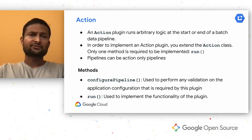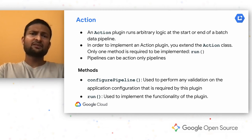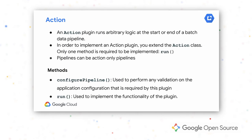Let's briefly look at action plugins. An action plugin runs arbitrary logic at the start or end of a batch pipeline. You can have a pipeline that only has an action plugin with no sources or sinks. To implement an action plugin, you extend the action class and implement a run method — all business logic lives inside this run method. You can also implement the configure pipeline method for validation of your action configuration.